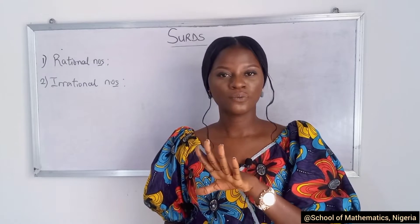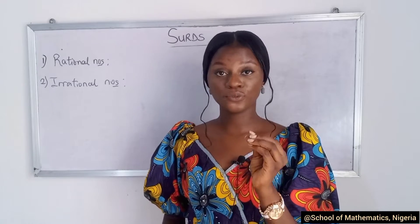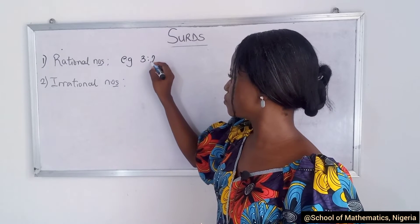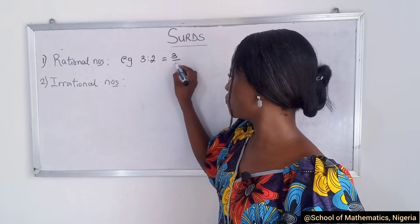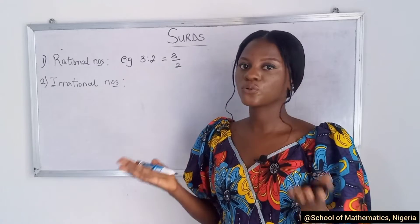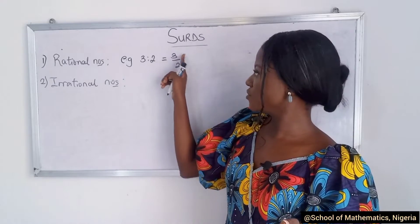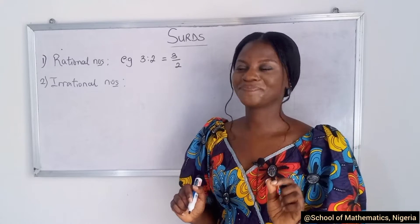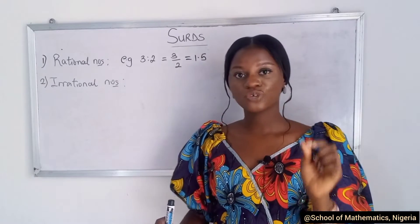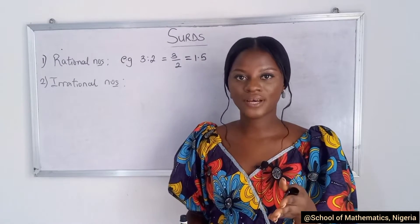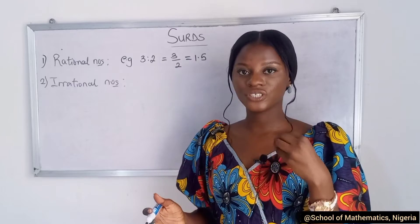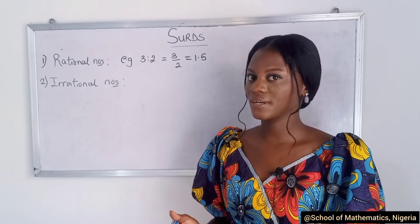Rational numbers come from the word ratio. If you know what ratio is, you know that 3 ratio 2 is the same as 3 over 2 — a fraction is the same as a ratio. It's also known as a quotient, where you have your numerator and denominator. So 3 over 2 gives us 1.5. Rational numbers are real numbers that are quotients which give exact values as their answers.